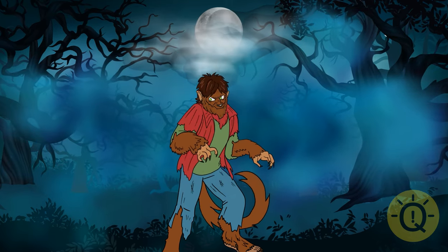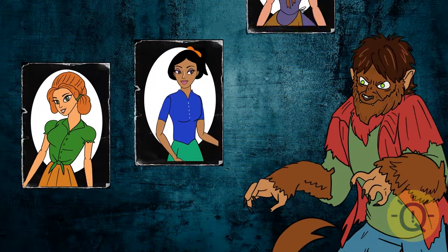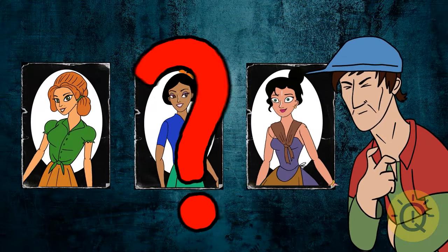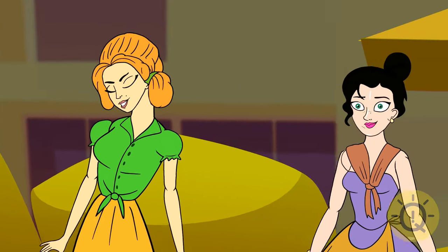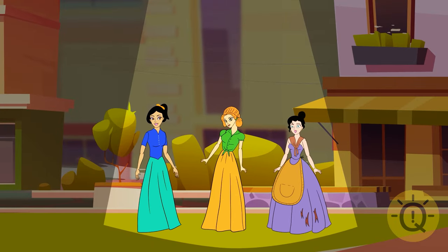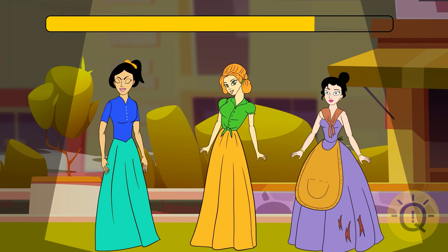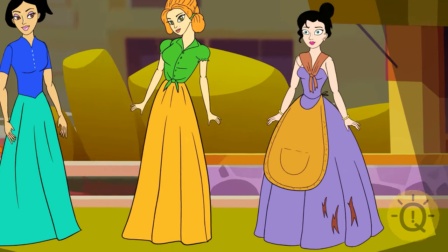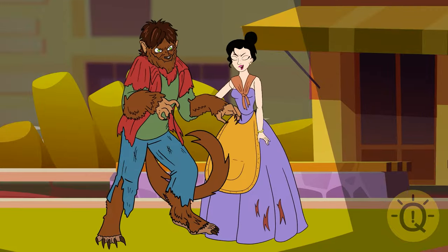For several days a large werewolf has been scaring the residents. You know the werewolf has a wife, and she's the only person who can calm the monster down and help him return to his human form. You have found three girls, each of them might be the werewolf's wife. You ask his wife to approach him, but none of the girls admits she's the one. So you have to make your own choice.